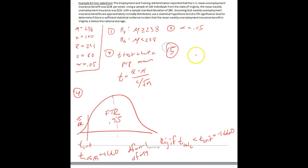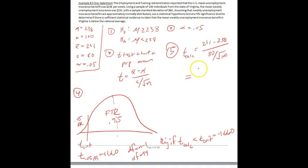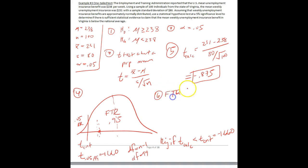Step five — let's just plug in the stuff that we know. t-calc equals x-bar 231 minus mu 238, divided by s 80 divided by square root of n, which is square root of 100 or 10. The number we come up with is negative 0.875. We need to know if negative 0.875 is less than negative 1.66 — and no, it's not. So we fail to reject, because t-calc is greater than t-crit.